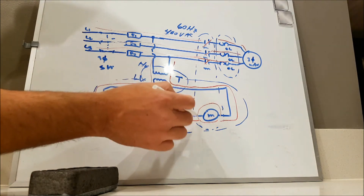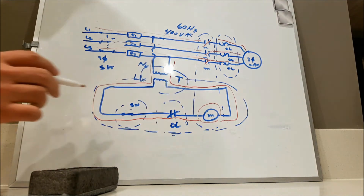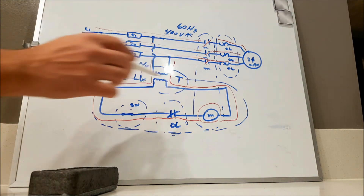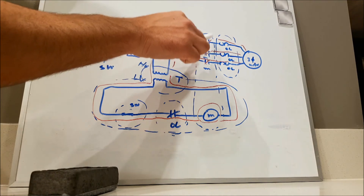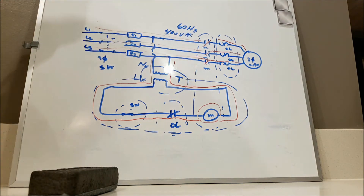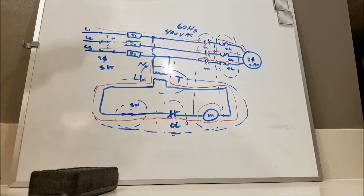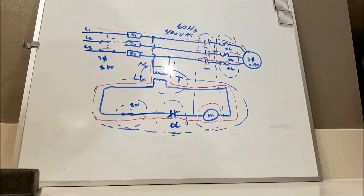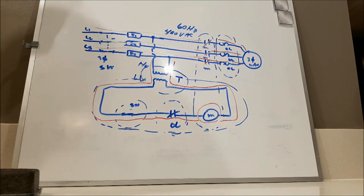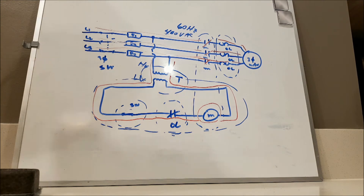When we open the control circuit switch, power stops flowing through the coil, the coil de-energizes, the contacts open, and the motor shuts off. There is also something important I want to mention in this video.